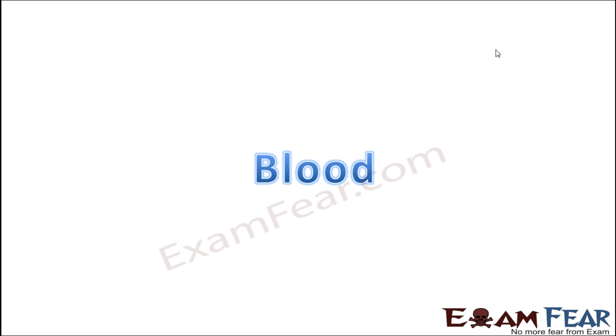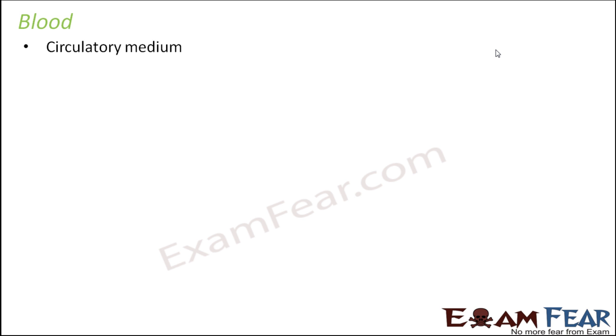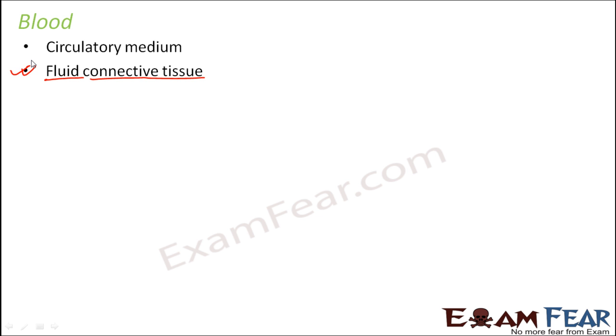Let us start our discussion with the first and most important body fluid: blood. We already introduced blood briefly in class 9 while discussing types of tissues, but here we will cover it in detail from scratch. Blood is nothing but the circulatory medium — the means of internal transport. It is a fluid connective tissue.